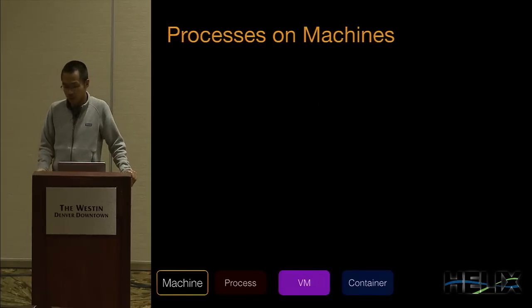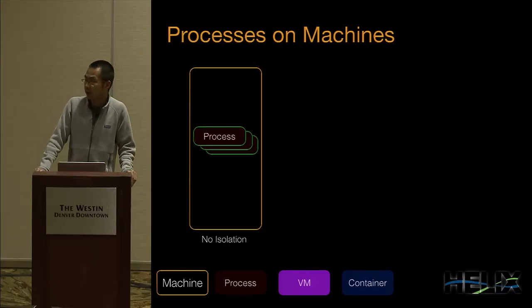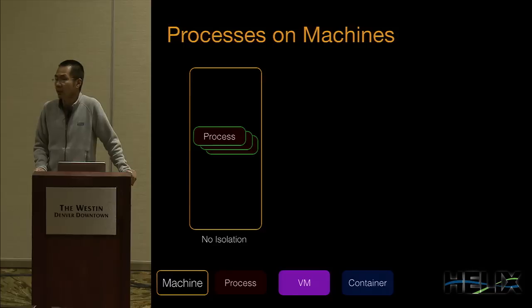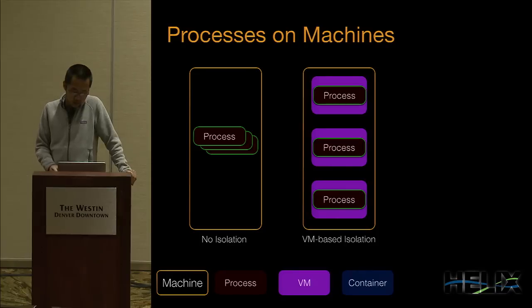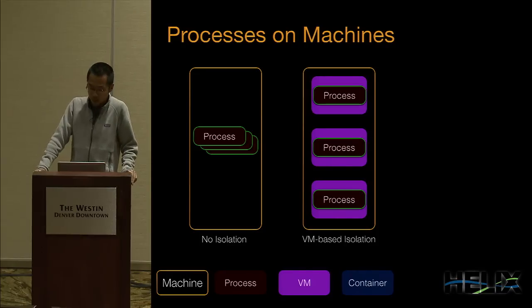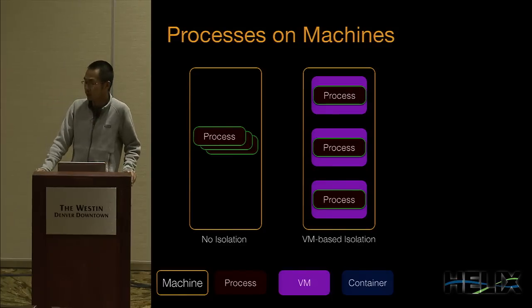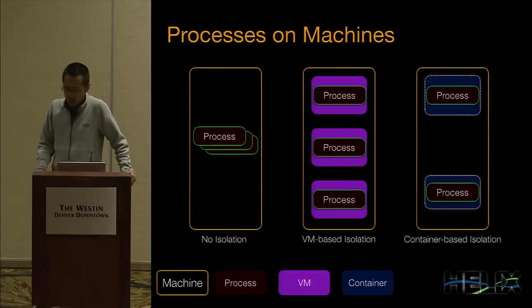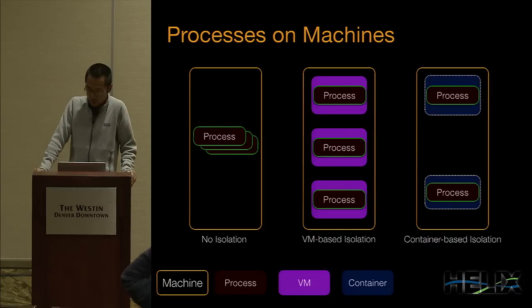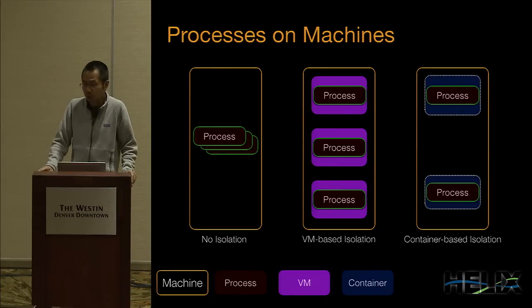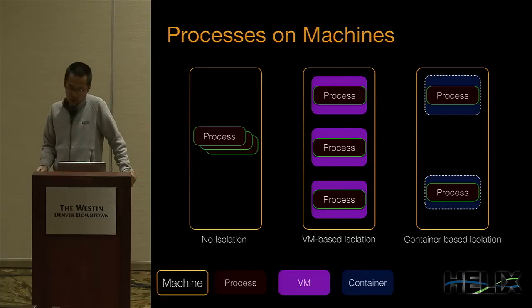How do we run these processes on each machine? We can run each process natively on the physical machine, but the problem is there's no resource isolation — processes will interfere with each other and compete for resources. Another solution is to use virtual machines, which provide strict isolation on resources. Alternatively, we can run multiple containers on the physical machine and run processes inside them. Compared to virtual machines, containers are more flexible, lighter-weight to start and stop, and provide isolation on resources like memory, CPU, and disk storage.